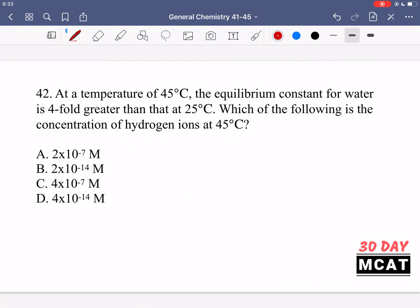In question 42 it says at a temperature of 45 degrees the equilibrium constant for water is fourfold greater than that at 25 degrees Celsius. Which of the following is a concentration of hydrogen ions at 45 degrees Celsius. So at 45 degrees we're seeing the equilibrium constant for water fourfold greater than that at 25 degrees. And then we're asked for the concentration of hydrogen ions.